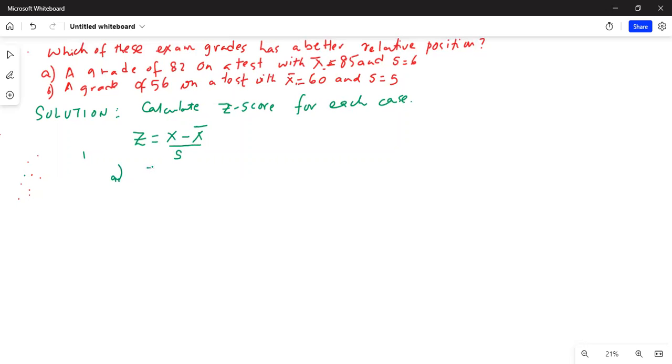Part A: z-score is x = 82, x̄ = 85, with a standard deviation of 6.